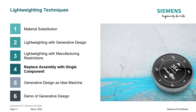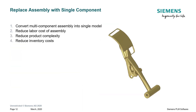What about replacing an assembly with a single component? We have an example from the automotive industry where we replaced a multi-component assembly with a single model. This reduced the labor cost of assembly, reduced product complexity, and reduced inventory cost.